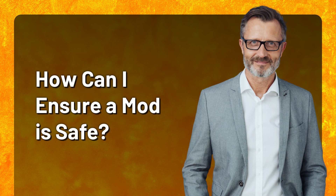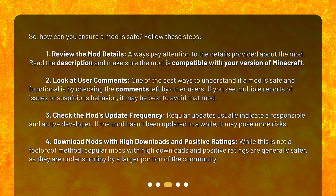So, how can you ensure a mod is safe? Follow these steps. Step 1: Review the mod details. Always pay attention to the details provided about the mod. Read the description and make sure the mod is compatible with your version of Minecraft. Step 2: Look at user comments. One of the best ways to understand if a mod is safe and functional is by checking the comments left by other users. If you see multiple reports of issues or suspicious behavior, it may be best to avoid that mod.